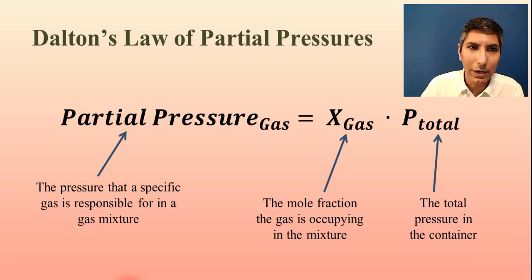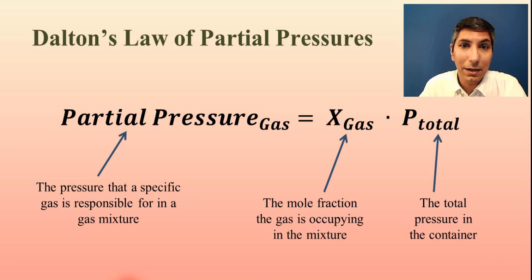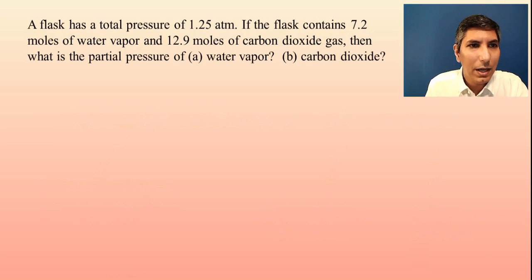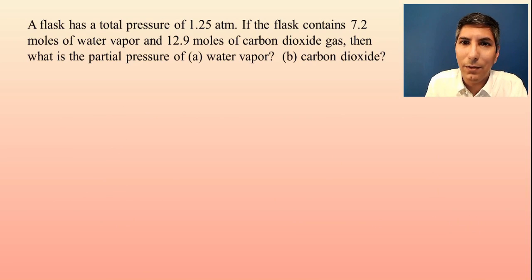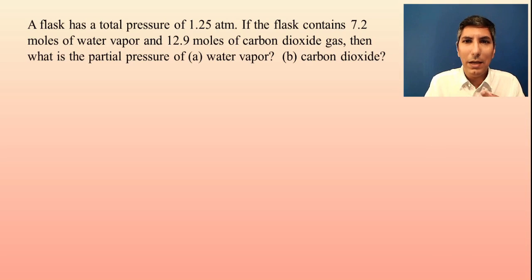We're going to use this equation — Dalton's Law of Partial Pressures — to determine the partial pressures of different gases in a mixture. Let's take a look at the first example. A flask has a total pressure of 1.25 atmospheres. If the flask contains 7.2 moles of water vapor and 12.9 moles of carbon dioxide gas, what is the partial pressure of A, water vapor, and B, carbon dioxide? Let's do part A first.